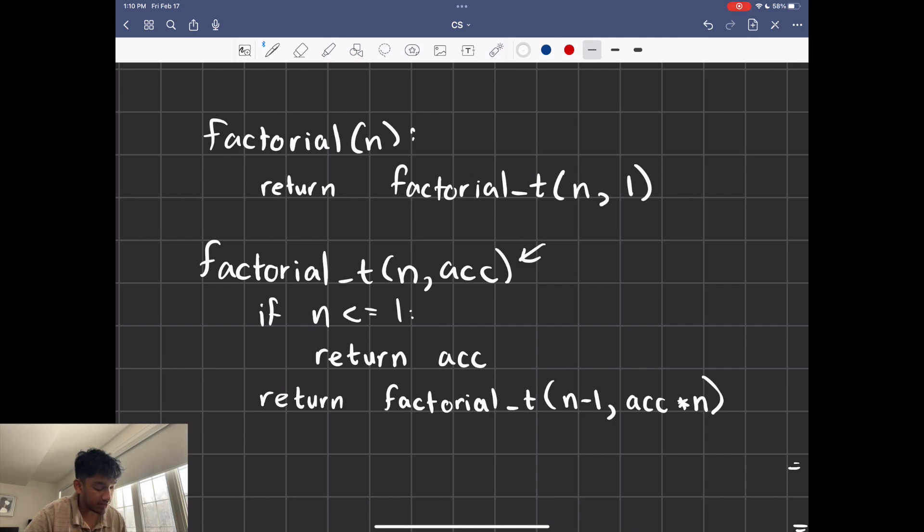You create an accumulator. And that way, when you return something, you don't have to do a computation with that recursive call.